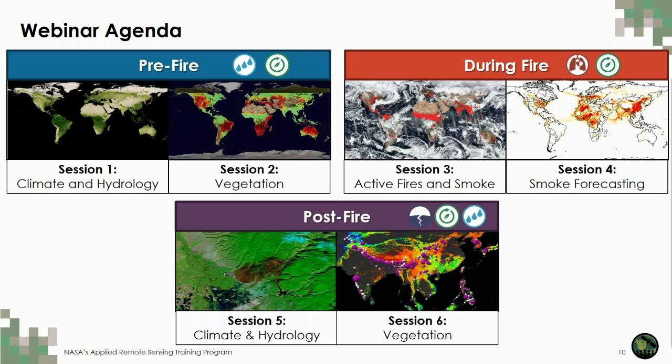Sessions three and four will be next week, hosted by the land and air quality and health teams, focusing on conditions during fire. Session three will concentrate on fire and smoke detection from satellites, and session four will describe how those observations are used in air quality and smoke forecasting. In the final week, sessions five and six will focus on post-fire conditions. Session five will cover fire impacts on soil moisture and runoff and landslides, and session six will describe burned area and burn severity mapping and post-fire vegetation regrowth.